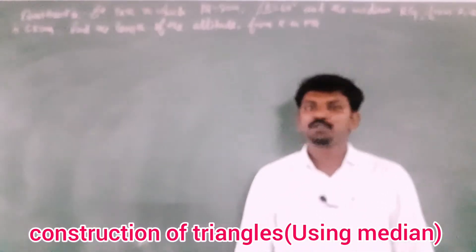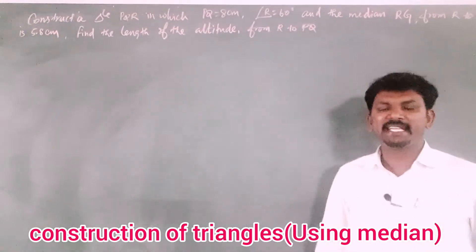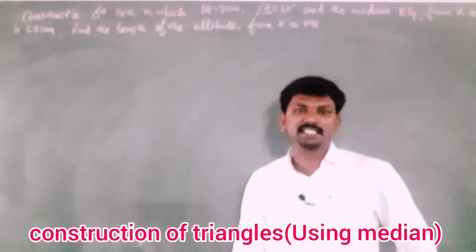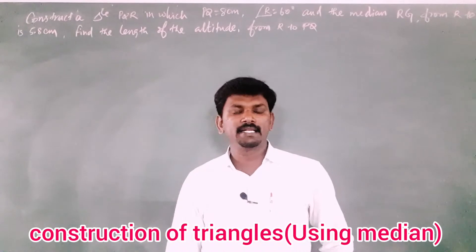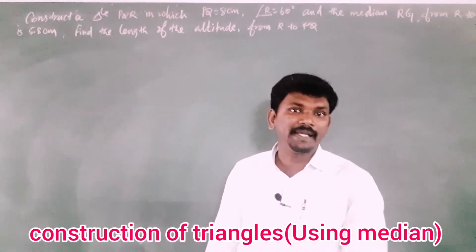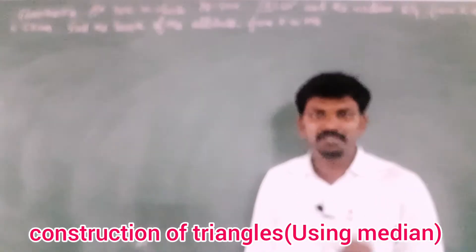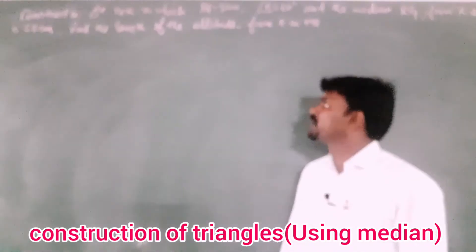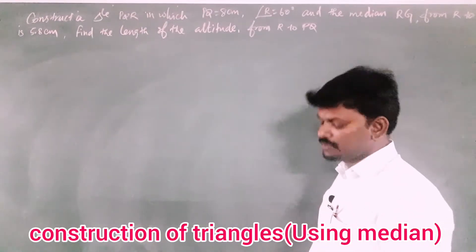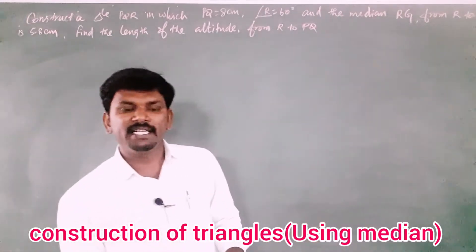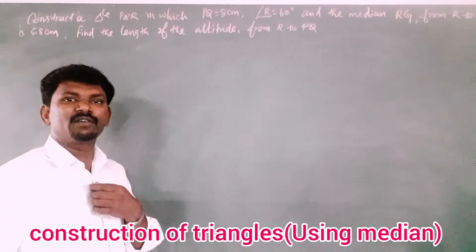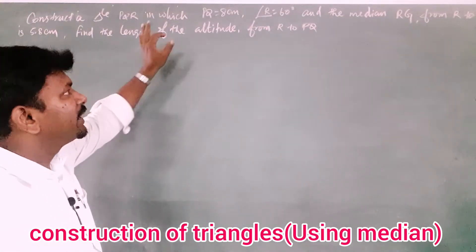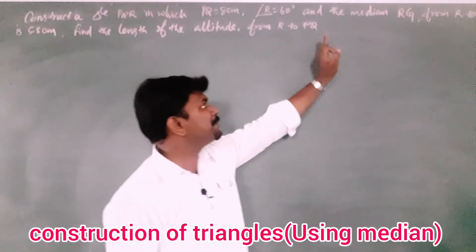Hello students. In this video we are going to do one practical geometry — construct a triangle PQR. This is construction of triangle, especially in 10th standard. In construction of triangle there are three types: using the median, using the altitude, and using the angle bisector. This question is based on constructing a triangle using the median.